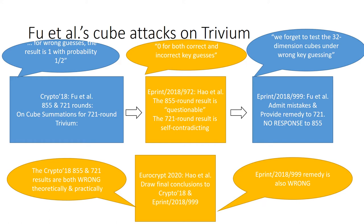Hao's findings force Fu to admit their mistakes. In ePrint, they admit that they forgot to test the 32-dimensional cubes under wrong key guessing. They provide 29-dimensional new cubes as a remedy to the 721 round result. However, Fu et al. have no response to the theoretic result, so the questionable comment remains.